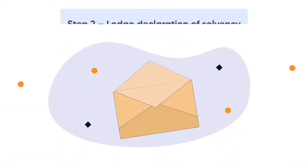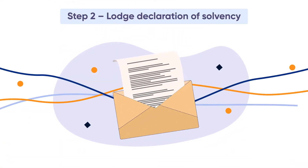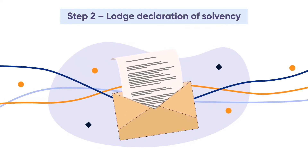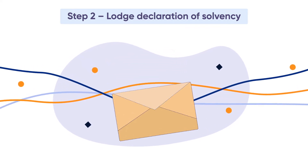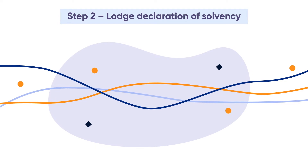Step 2: Lodge declaration of solvency. The declaration of solvency must be lodged before the date on which a notice of meeting of members is sent out.